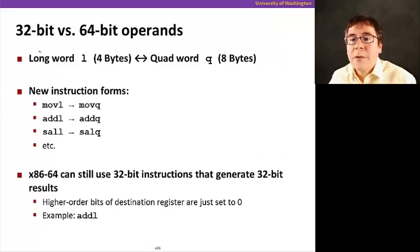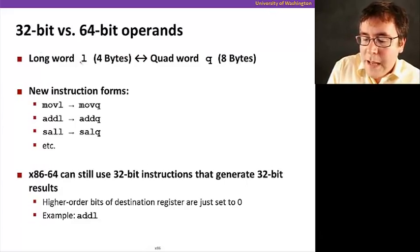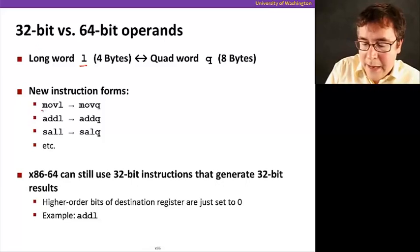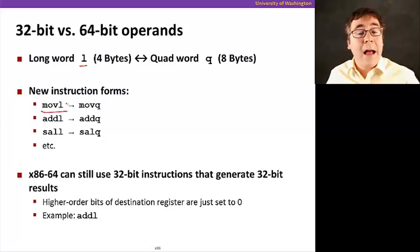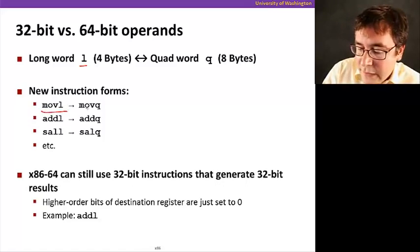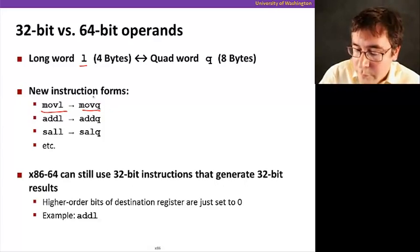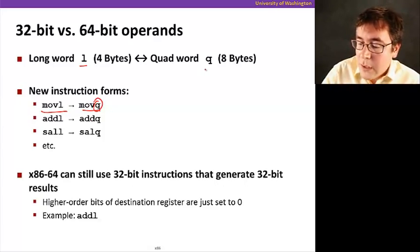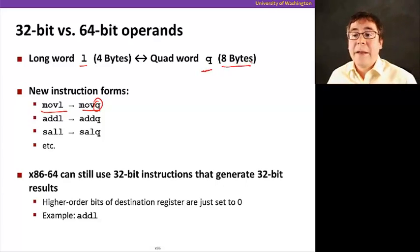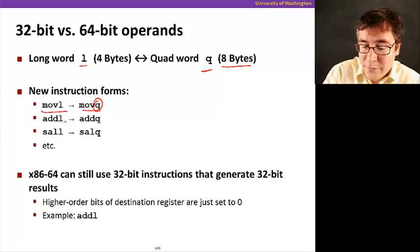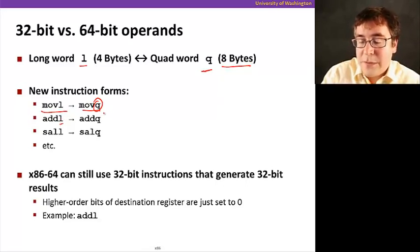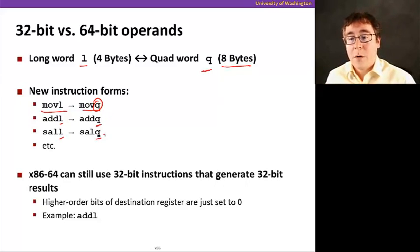And now, the way we look at operands in 32 versus 64-bit mode is the following. Remember that we had in IA32, we looked at moveL, and L referred to moving four bytes worth of data. Now, what we have in X86-64 is moveQ. It's a new type of data size that is eight bytes or 64 bits long. We also have other structures, like addL that's present in IA32. Now we have addQ, and then shiftL, we have shiftQ, and so on.